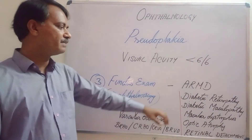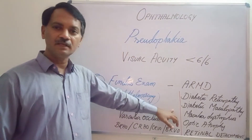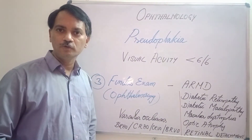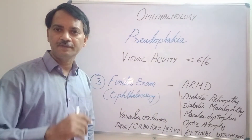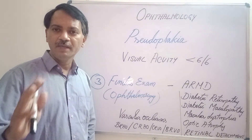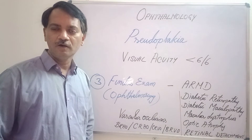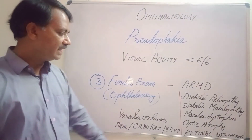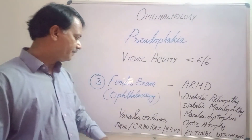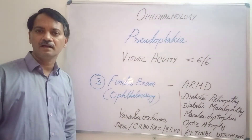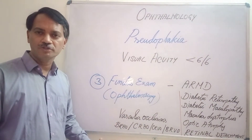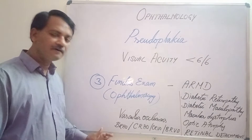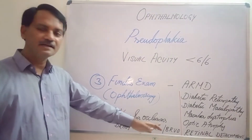Similar vision loss can occur with diabetic retinopathy, diabetic maculopathy, macular dystrophies, and optic atrophies. Optic atrophy may be primary, secondary, or glaucomatous; if in the initial stage, further loss of vision may be preventable. There may also be retinal detachment, central retinal artery occlusion, central retinal vein occlusion of ischemic type, branch retinal artery occlusion, or branch retinal vein occlusion — all of which can affect improvement of vision following cataract surgery with IOL implantation.